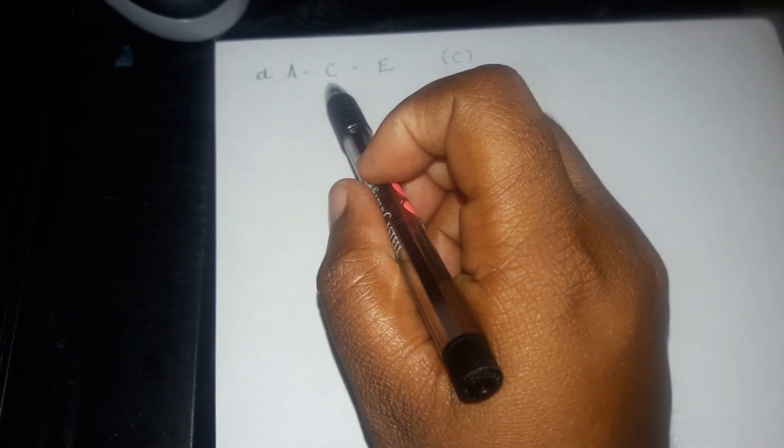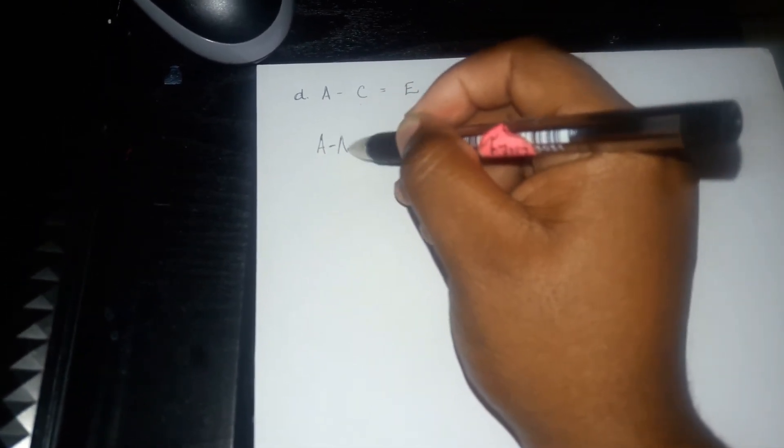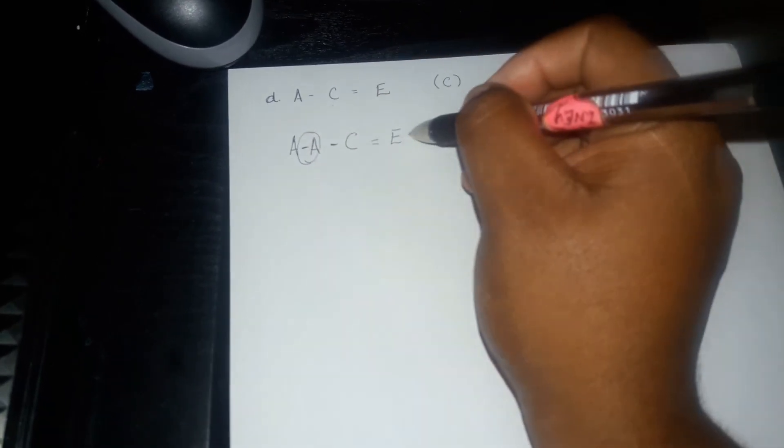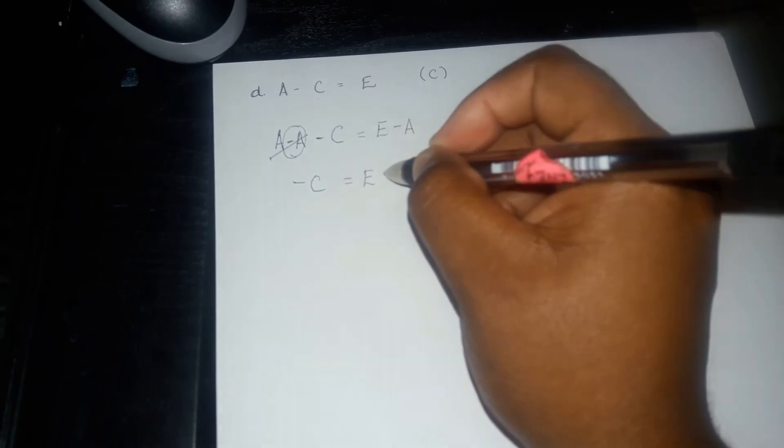Now for the final one, part d: d minus c equals to e, solving for c. One way to do this: get rid of a first. A is positive, so you minus it from itself and write back the equation. Since you minus a on the left, you have to minus a on the right as well. You are then left with minus c equal to e minus a. But this is negative c, not c.